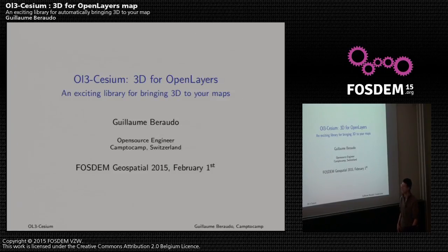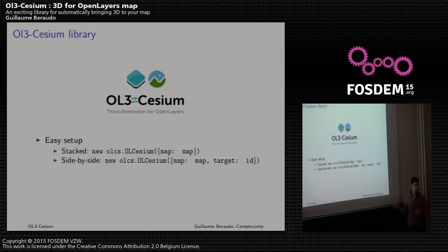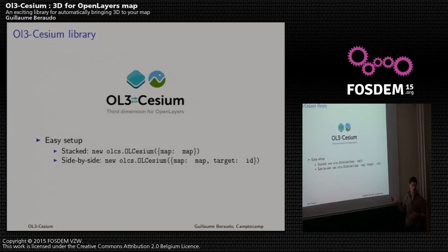It's really easy to set up. If you want to have stacked views — that is, the 3D globe on top of the 2D map — you just pass the OpenLayers map to the constructor and it will create the globe for you. And if you want a side-by-side view, you pass one more parameter: the DOM element where you want the Cesium globe to be attached.